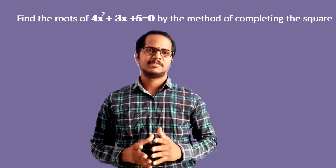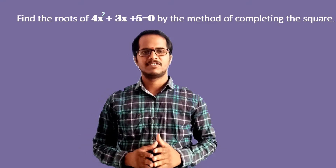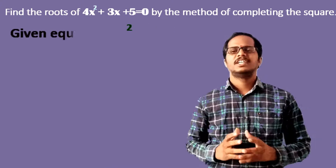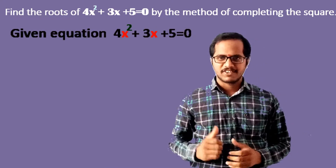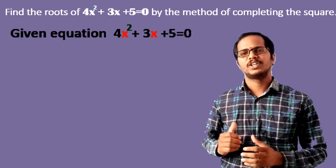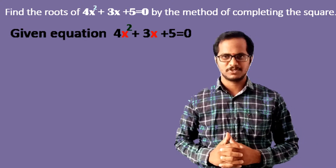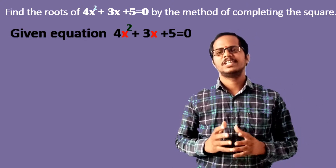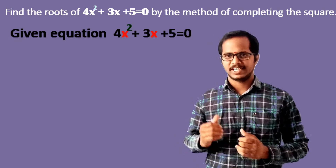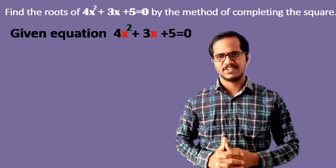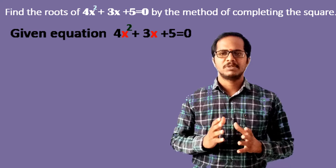Example seven: find the roots of 4x² + 3x + 5 = 0 by the method of completing the square. So here the given quadratic equation is 4x² + 3x + 5 = 0. We need to find the solutions or the roots of this quadratic equation using the method of completing the square.